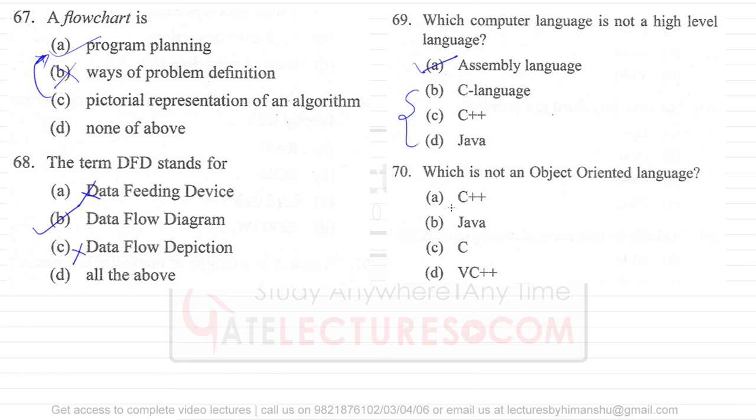Now question number 70 says which is not an object oriented programming language. C plus language as we know, it is object oriented programming language. Actually, the trend of object oriented programming language is started by C plus only. It started like this, we were having a language B in 1970s.